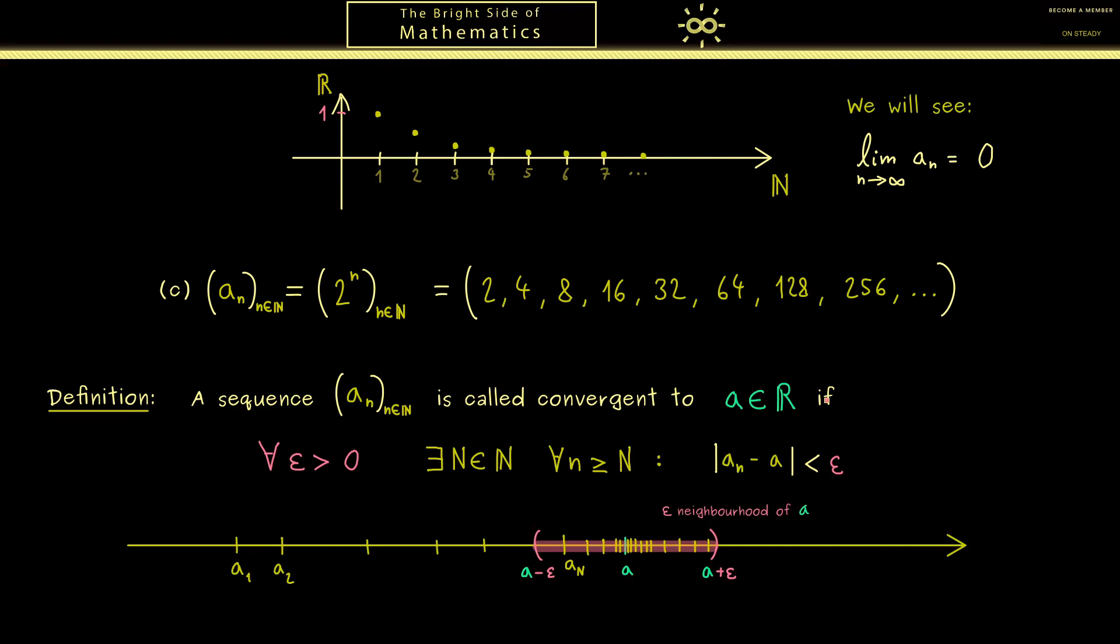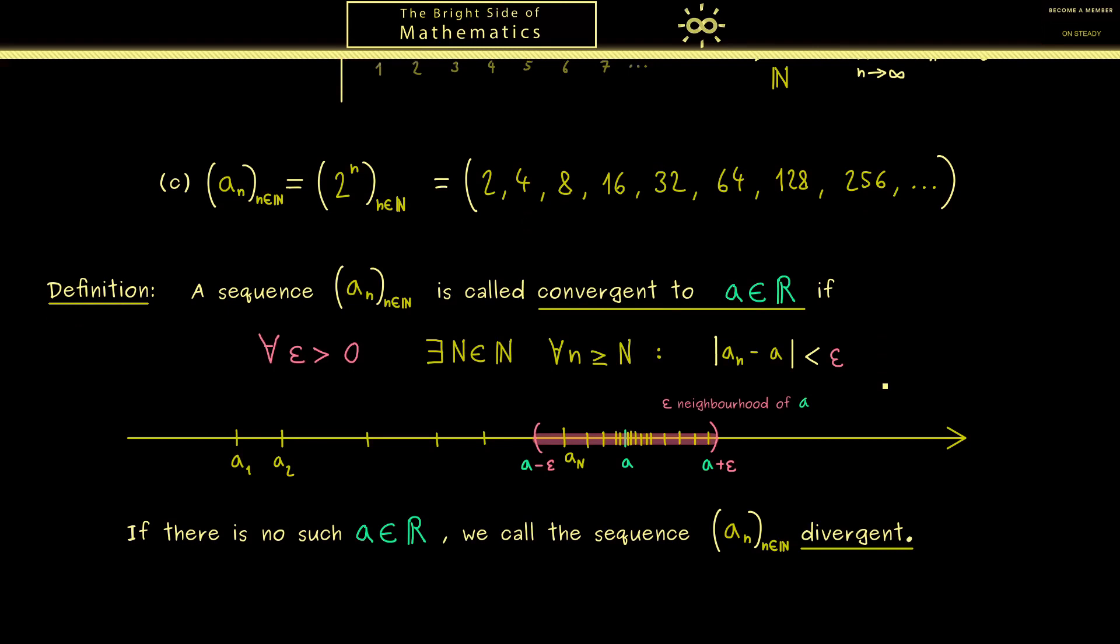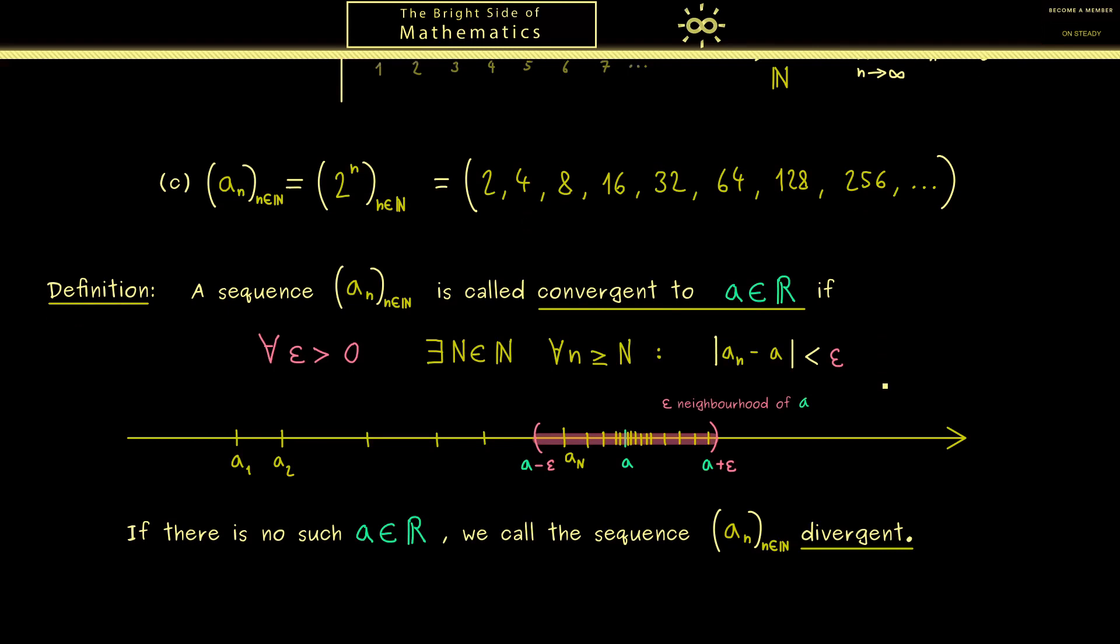In the end, this doesn't matter because we still have infinitely many sequence members inside this epsilon neighborhood and only finitely many outside. With this, you have the full definition of convergence. Now the opposite of this we simply call divergence. In the case we don't find such a limit point a with the property above, we call the sequence divergent. We have already seen two examples where it's very obvious that we can't find such an a. But of course, you should really write down a correct proof for this.